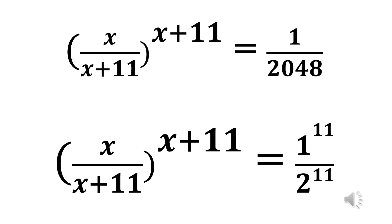The first thing we are going to do is to see how we can simplify 2048. We need to express it as a power of 2, so 2 raised to power 11 will give us 2048. So we put exponent 11 also for 1, so that we now have x over (x plus 11), all raised to power (x plus 11), equals 1 raised to power 11 divided by 2 raised to power 11.